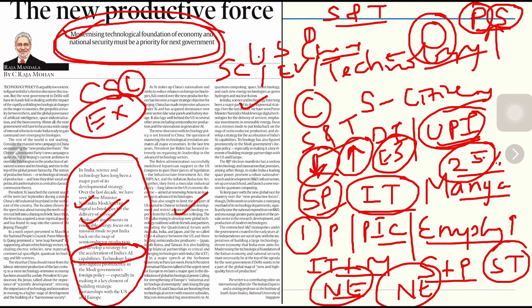The entrenched science and technology monopolies under the government, created in the early years after independence, are out of sync with the imperatives of building a large technology-driven economy. Modernizing the technological foundation of the Indian economy and national security must be at the top of the agenda for the new government. Science and technology improve the quality of the workforce in the STEM domain.